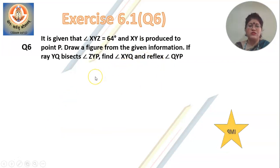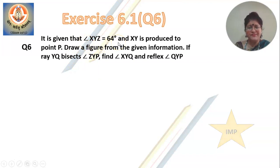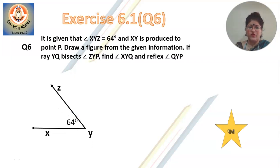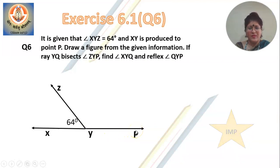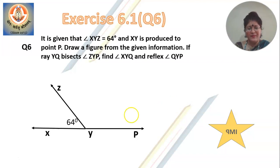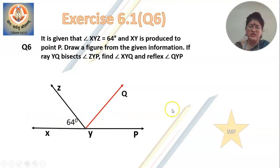Now, how do you solve this? First and foremost, let us decipher what is given and draw a diagram based on that. Draw a figure showing an acute angle — that is angle XYZ measuring 64 degrees. You need not use a protractor and measure exactly 64 degrees; just draw any acute angle. That is what I have done: angle XYZ measuring 64 degrees. Now when they say XY is produced, it means you are extending XY, and when you extend it, you name the endpoint P. When XY is produced to point P, you extend this and name it P. Now if ray YQ bisects angle ZYP, draw the angle bisector of ZYP. The angle bisector is YQ, and when YQ is the angle bisector, these two angles are equal. This is how the diagram will look.